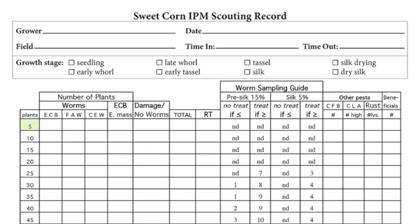You will look at five adjacent corn plants and mark down the total number of plants that showed any damage, eggs, or larvae. Also note the number of flea beetles, the number of plants with greater than 20 corn leaf aphids, the number of leaves with rust, and the number of beneficial insects observed.